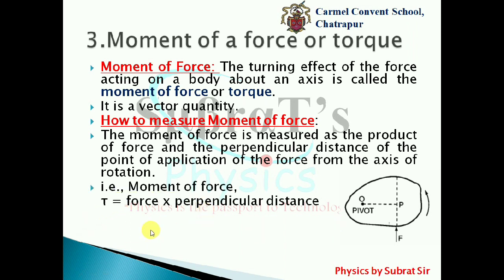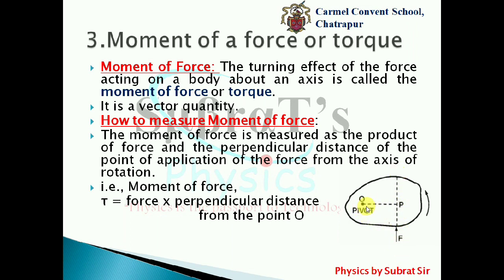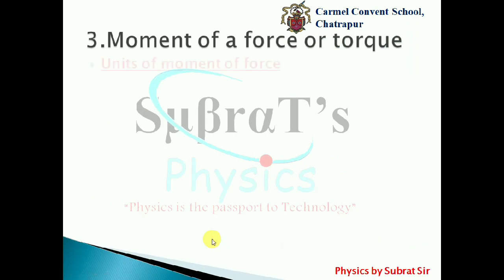The moment of force can be written as tau (τ), which is equal to force multiplied by the perpendicular distance from the point O. Here a force is acting in one direction, and OP is the perpendicular distance, so you can write: τ = F × OP.